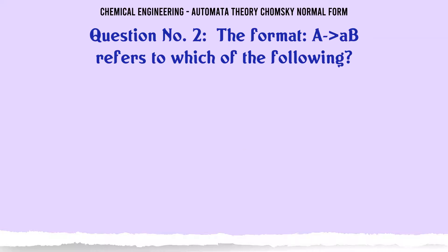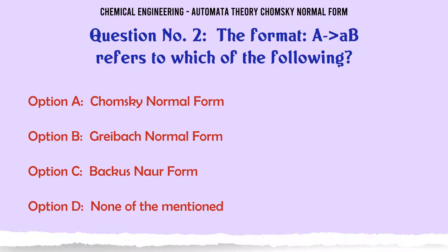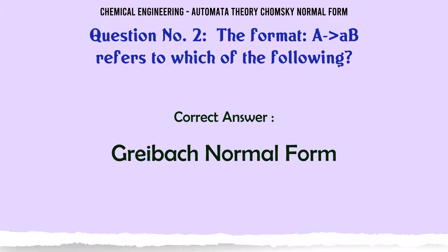The format A → αBβ refers to which of the following? A. Chomsky normal form. B. Greibach normal form. C. Backus-Naur form. D. None of the mentioned. The correct answer is: Greibach normal form.